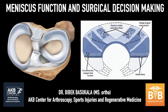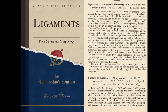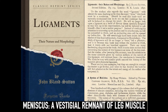Hello and namaste friends. Today I am going to discuss about meniscus function and surgical decision making in meniscus injury. The decision making in meniscus injury dates back to the early 1800s, and this paper by John Sutton, 'The Ligaments: Their Nature and Morphology,' is very important in decision making at that time.